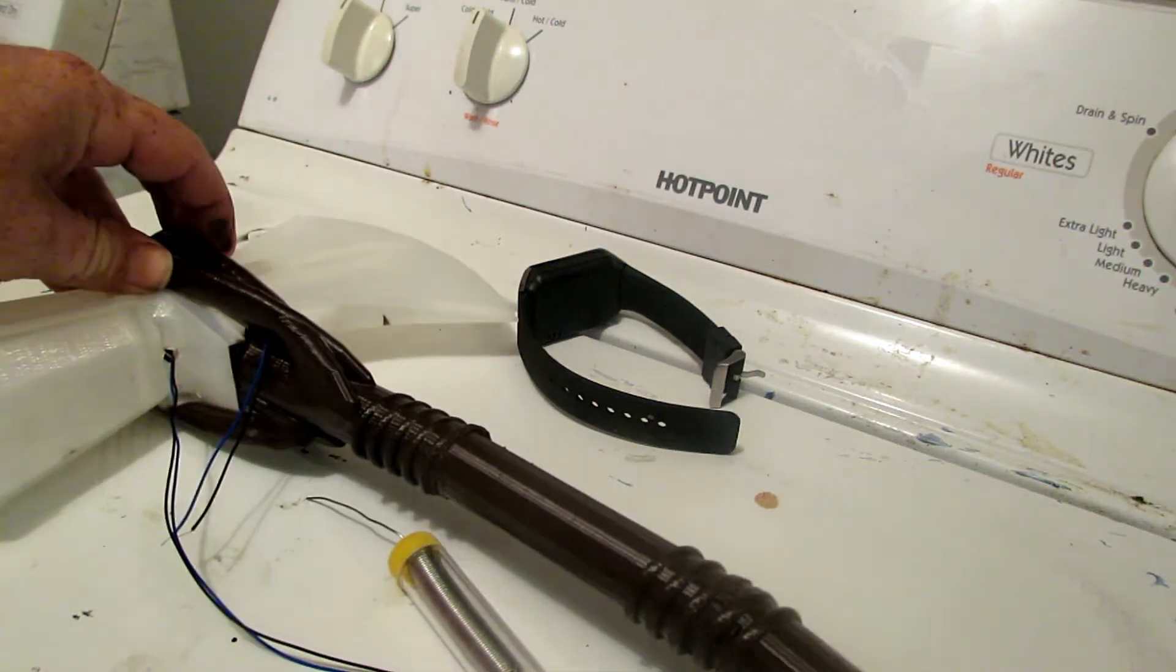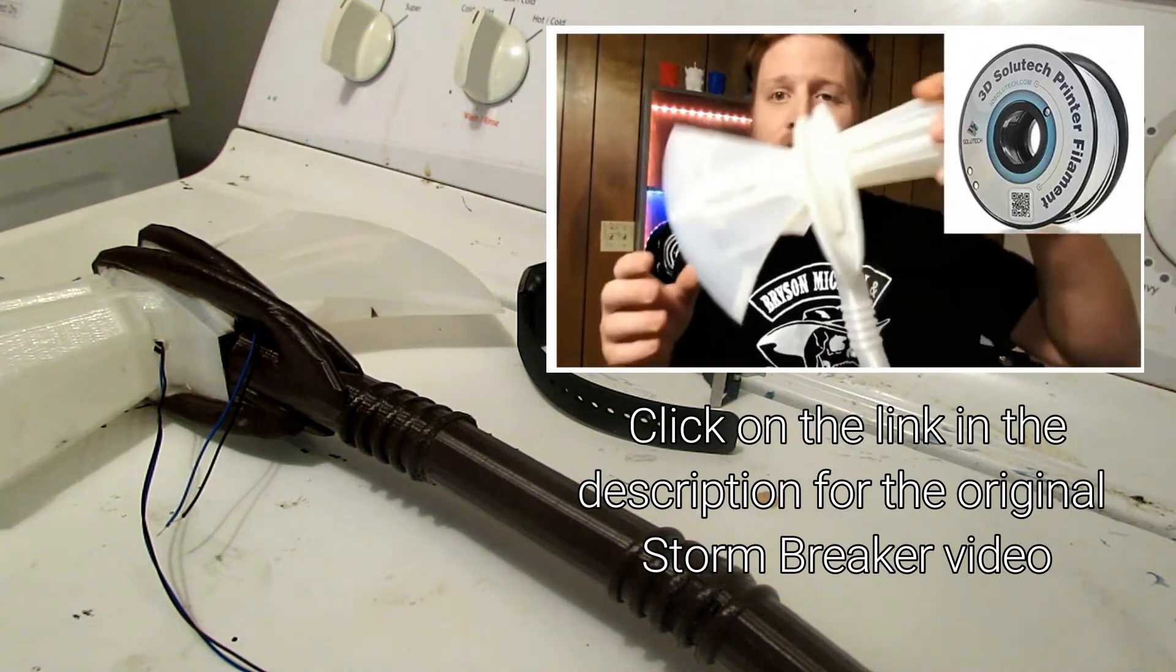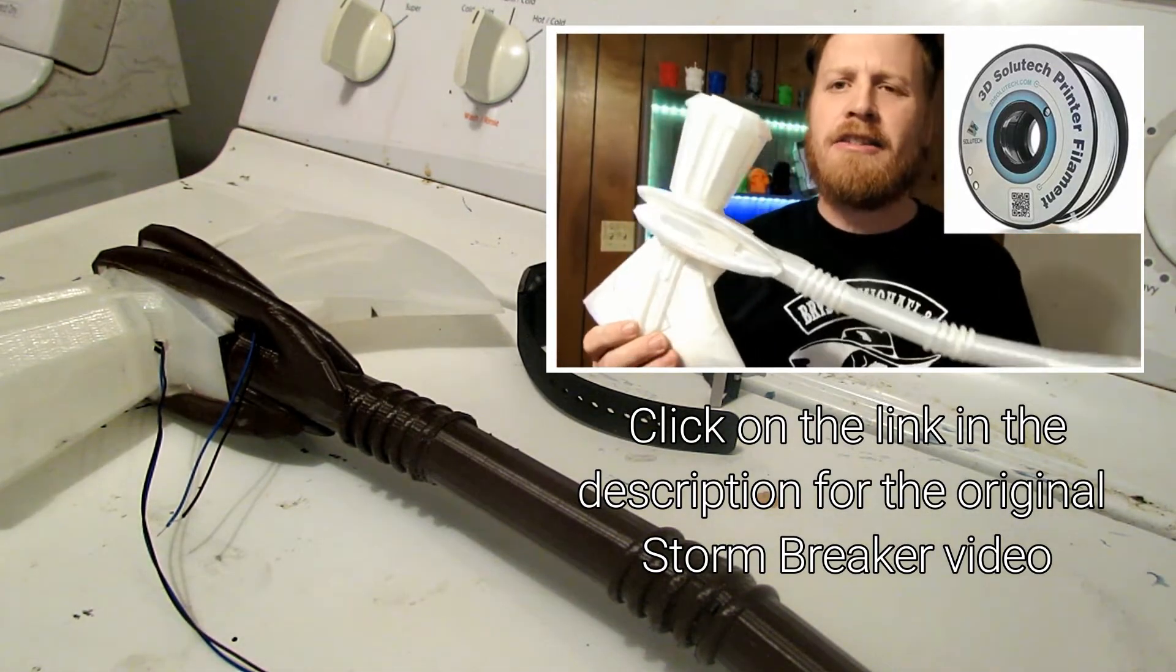Alright, so here's the Stormbreaker. All I've done is spray-painted the handle brown. That's it. Taped up the top, spray-painted the handle brown. Haven't done any wet sanding or anything.